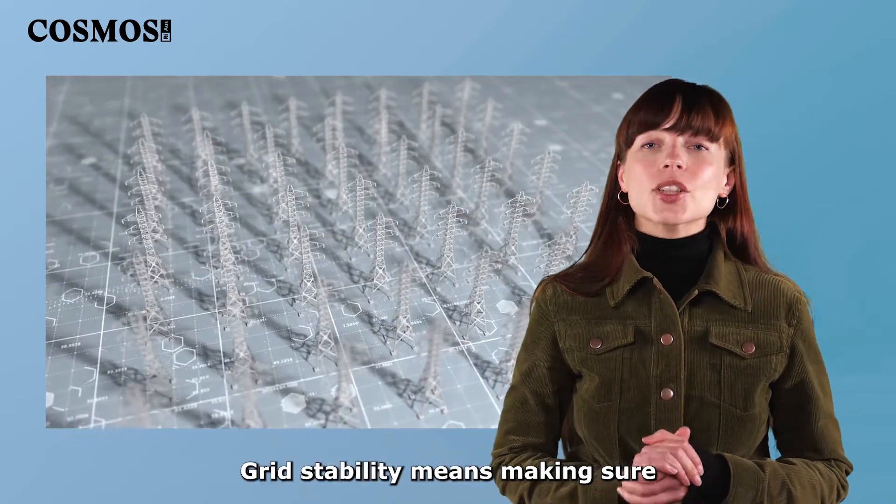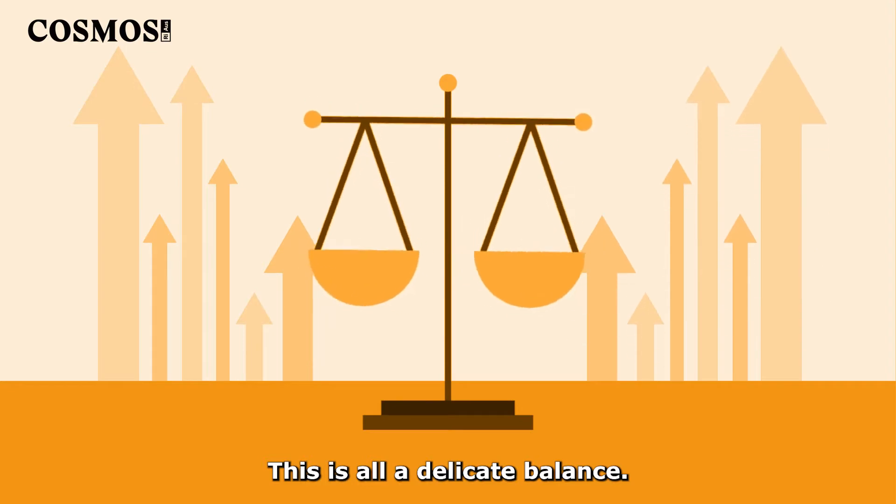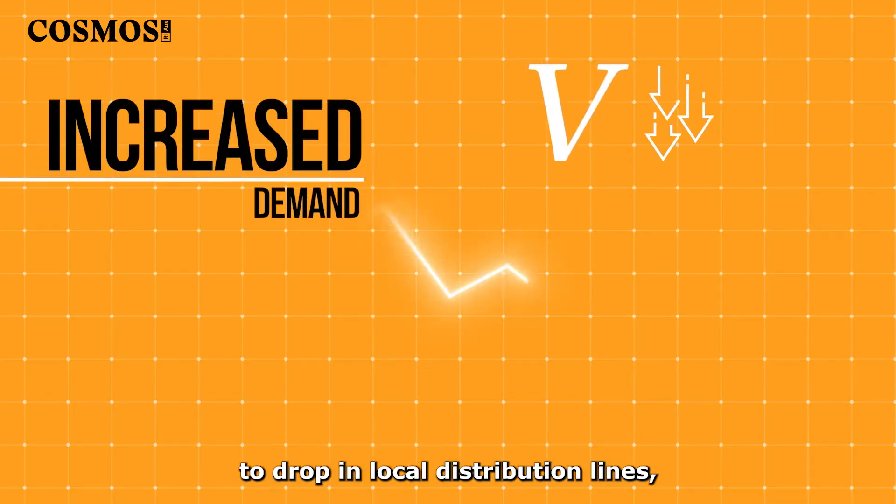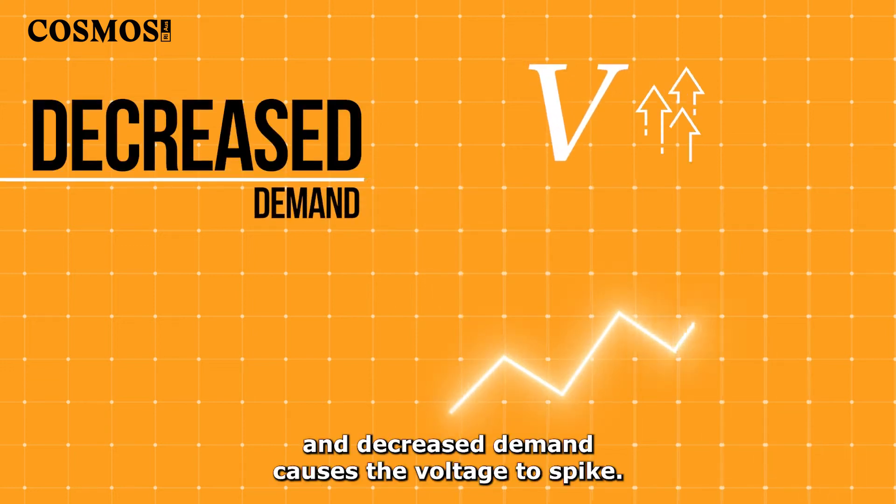Grid stability means making sure electricity stays within these boundaries as it flows through the grid. This is all a delicate balance. For example, increased demand for electricity causes voltage to drop in local distribution lines and decreased demand causes the voltage to spike.